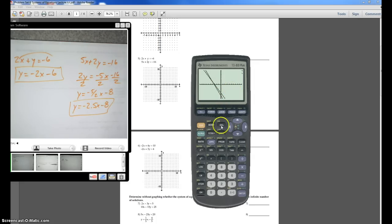So now what you're going to do is hit second trace, intersect, and you just hit enter three times. Intersection of negative 4, 2.